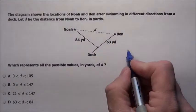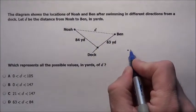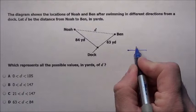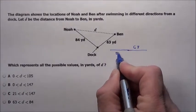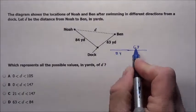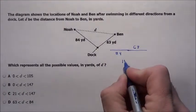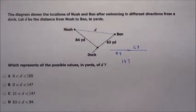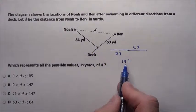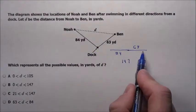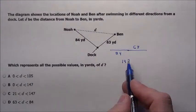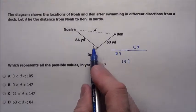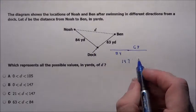If they swam — imagine here's the dock and one swam this way 63 and the other swam that way 84 — we could see they'd be 147 apart. But that angle is not quite that, so 147 would be the most that they could possibly be apart. But it's probably less than that.